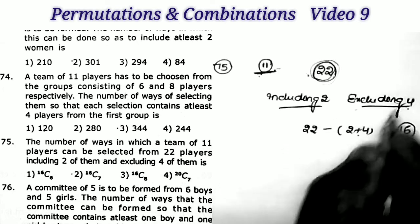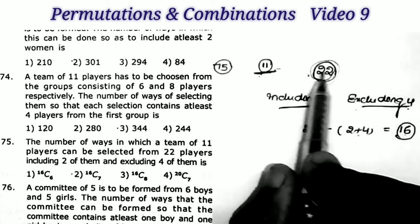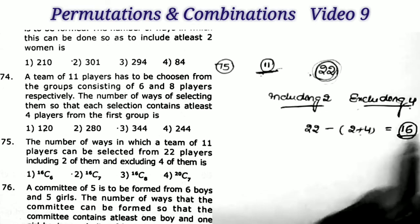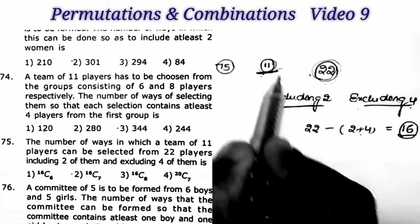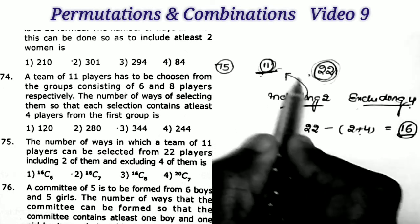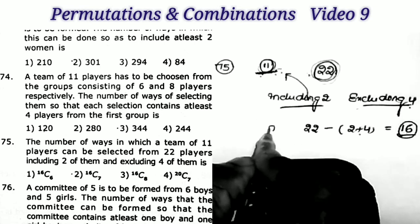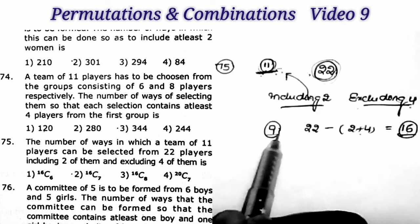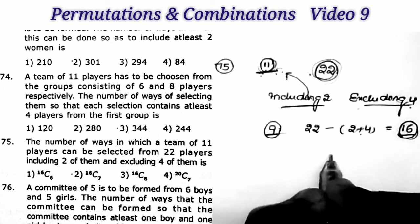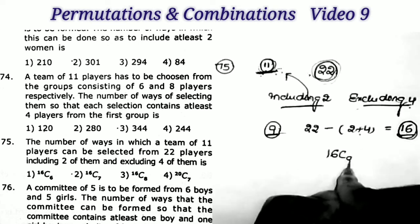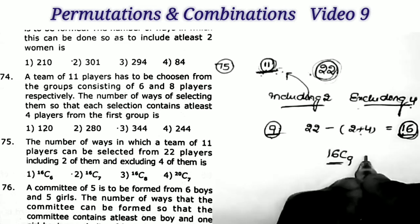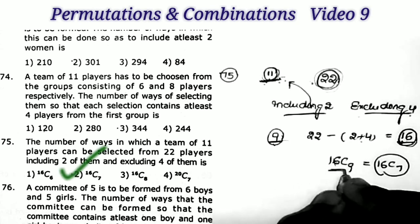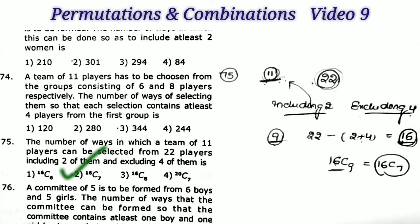Since the 2 members are already included, we only need to select 9 more from the 16 remaining members. The number of ways = 16C9. Using the identity nCr = nC(n−r), 16C9 = 16C7, and that is the second option.